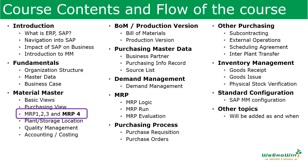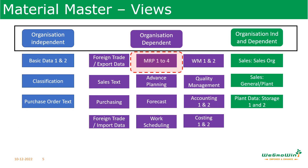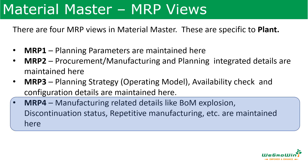After discussing the basic view, purchasing views, and MRP1, 2, and 3, we are going to discuss the MRP4 view. All four views of MRP are organization dependent, which is why they are in the organization dependent area. MRP4 view contains details related to manufacturing like BOM explosion, discontinuation of materials, component scrap, and whether it is repetitive manufacturing or not.